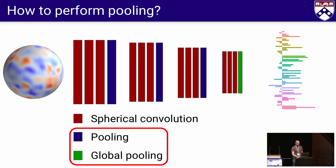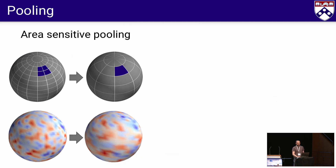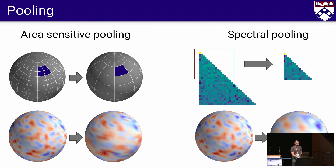Now let us consider pooling. Max and average pooling are not good ideas for spherical functions, due to the variable pixel size of an equiangular grid. We experiment with two methods. First, weighted average pooling, which takes into account the area of each pixel in a two-by-two window — a local spatial operation not guaranteed to preserve band limits. Second, pooling in the spectral domain that discards all coefficients above some frequency — a global operation that preserves band limits and is more efficient, since the next inverse spherical Fourier transform is done at lower resolution.